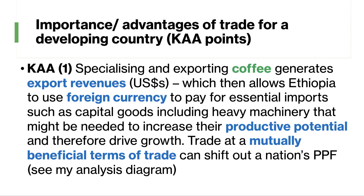So here we go. Let's quickly work through the answer — the importance, the advantages of trade for developing countries. We're looking to build two arguments for saying that trade can be a stimulus, a catalyst, a support for growth in a country such as Ethiopia. Here's my first KAA point: specialising in and exporting coffee generates export revenues, particularly foreign exchange — US dollars — and those dollars allow Ethiopia to use that foreign currency to pay for essential imports, things they maybe can't produce, such as capital goods, heavy machinery, computers, industrial plant that might then be needed to increase their productive potential and drive growth.